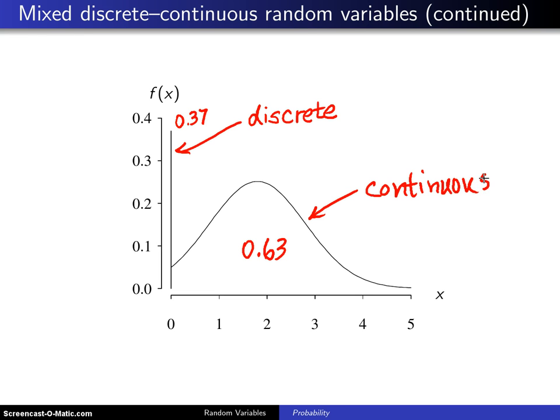These distributions are not as common as strictly discrete and strictly continuous random variables, but they do show up from time to time in applications.